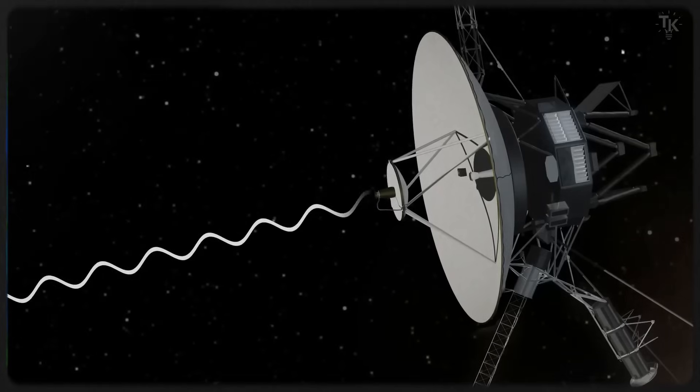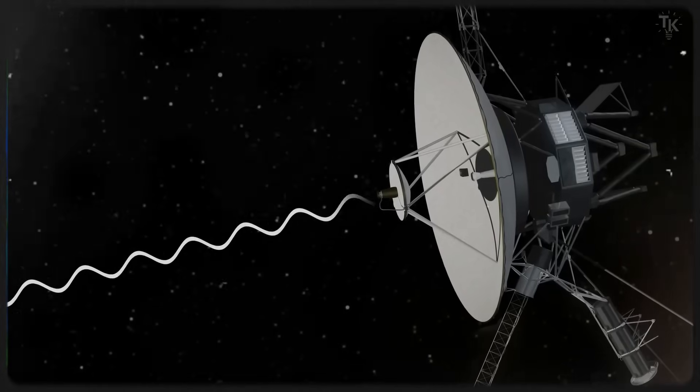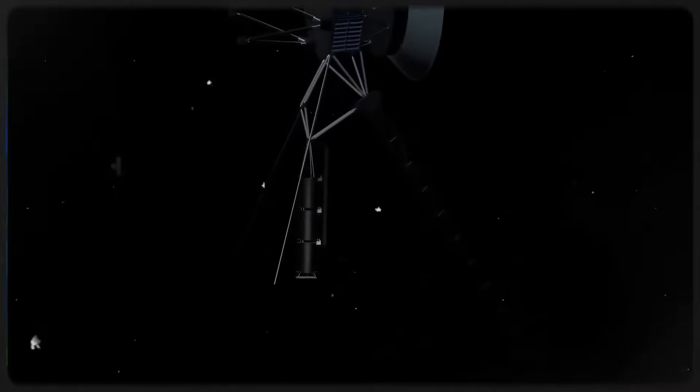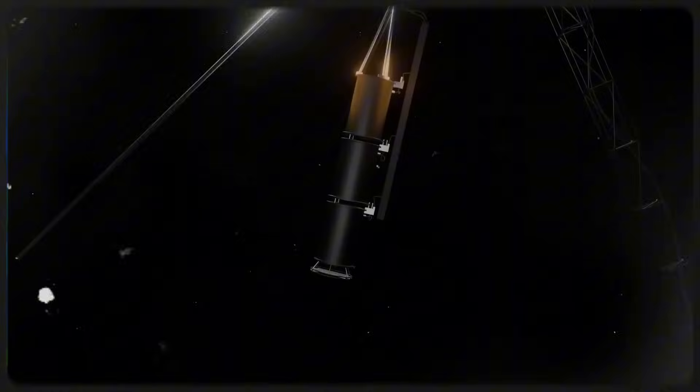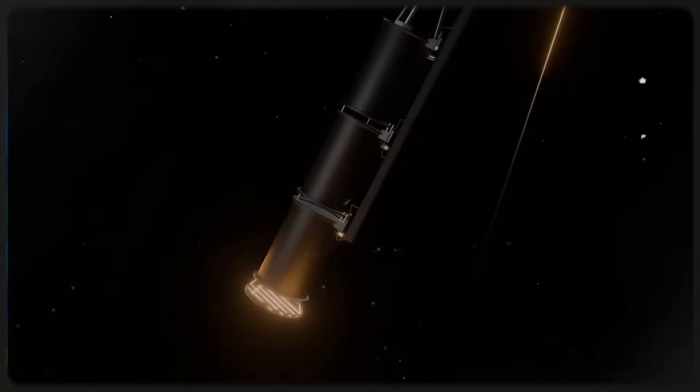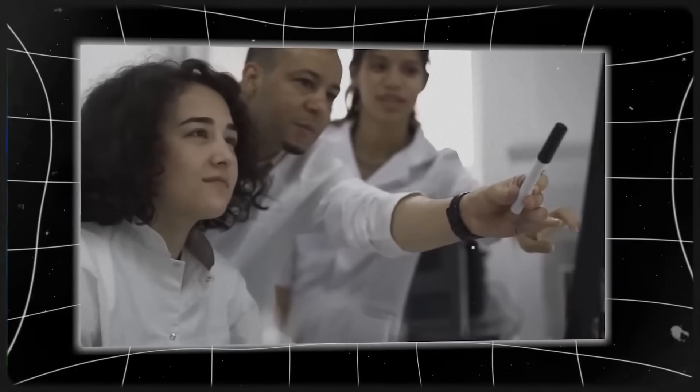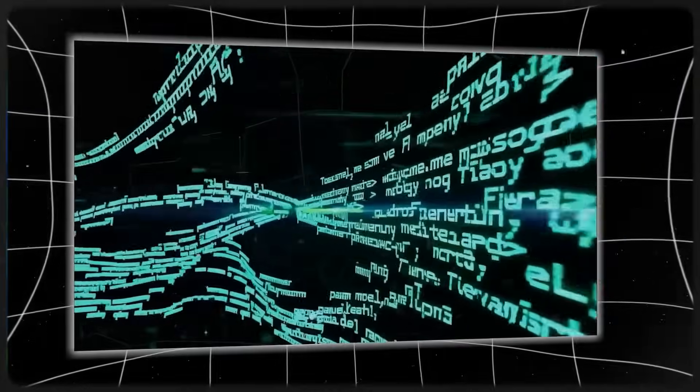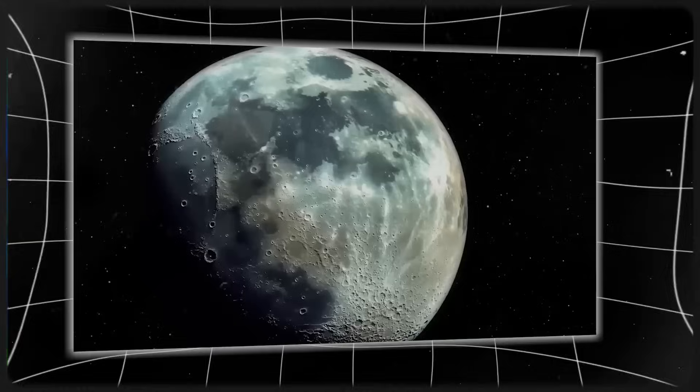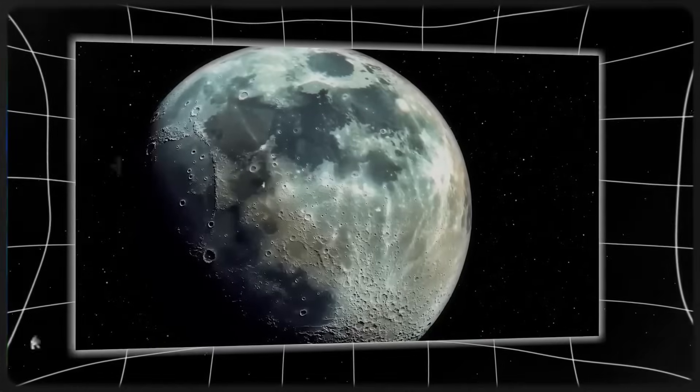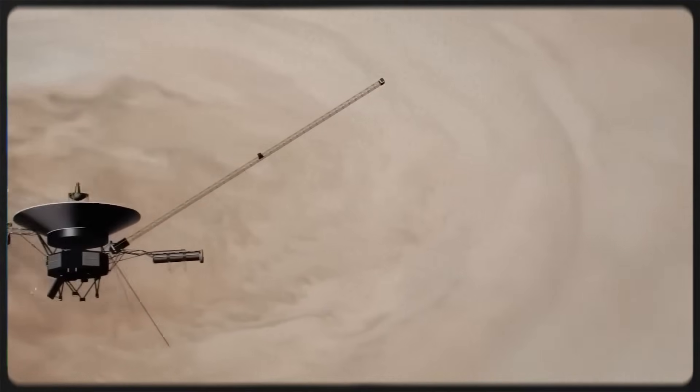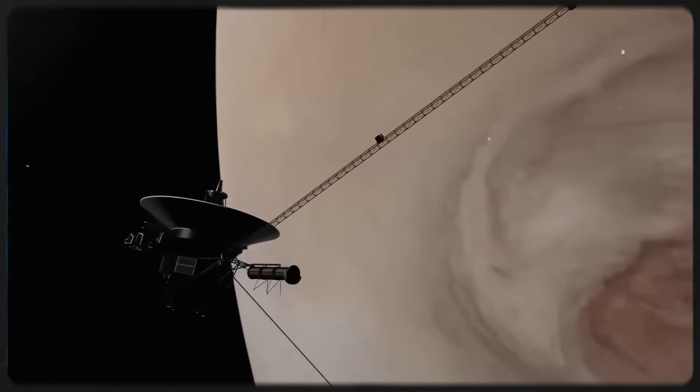When Voyager was launched, it was never intended to leave the solar system. Its main mission was to observe the gas giants and then simply drift. But now, over four decades later, it's doing something far more profound: revealing the true shape of reality itself. What started as a journey past the planets has become a voyage into the unknown architecture of the universe. And here's the irony. The spacecraft that carries the golden record, the message from humanity to the cosmos, may be the first to receive one in return.